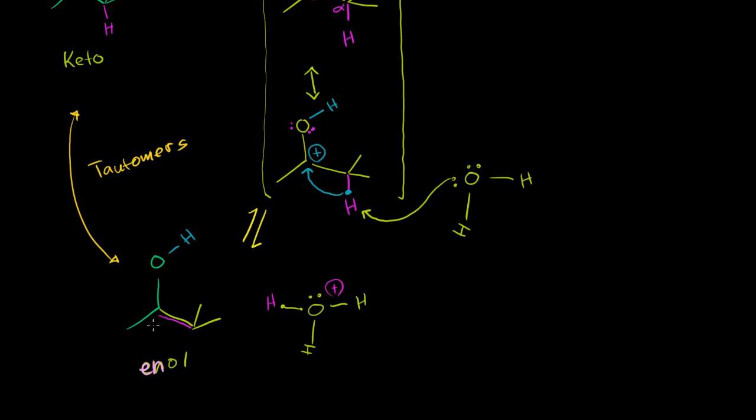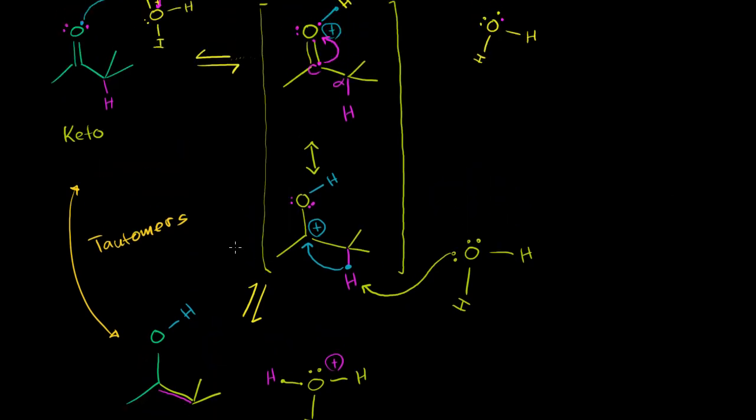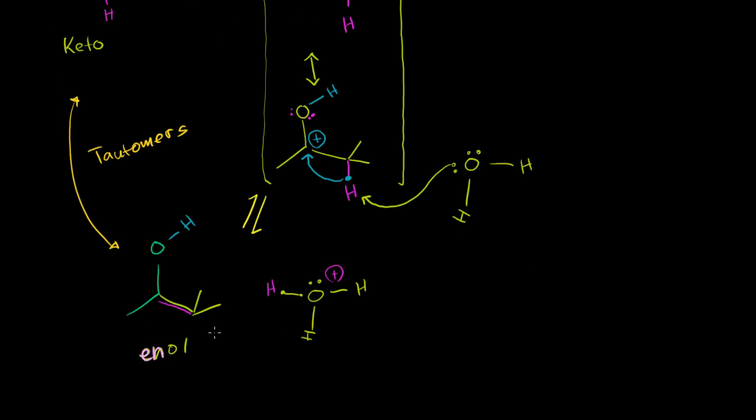In a solution, you won't see much of the enol form, but these can occur. It can spontaneously, through equilibrium, get to the actual enol form. And so you could imagine, these are tautomers. So this mechanism is actually called a tautomerization. And these are the keto and enol forms of the tautomers.